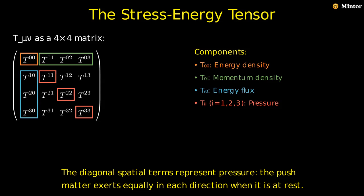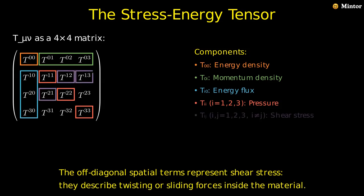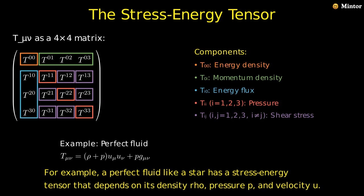The diagonal spatial terms represent pressure, the push matter exerts equally in each direction when it is at rest. The off-diagonal spatial terms represent shear stress. They describe twisting or sliding forces inside the material. For example, a perfect fluid like a star has a stress energy tensor that depends on its density ρ, pressure p, and velocity u.